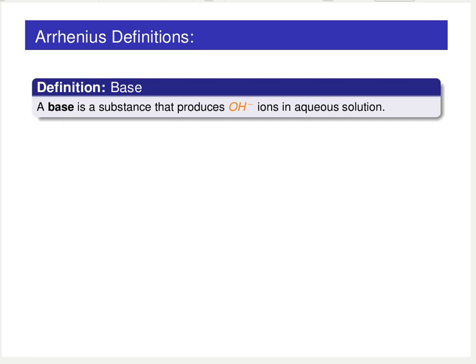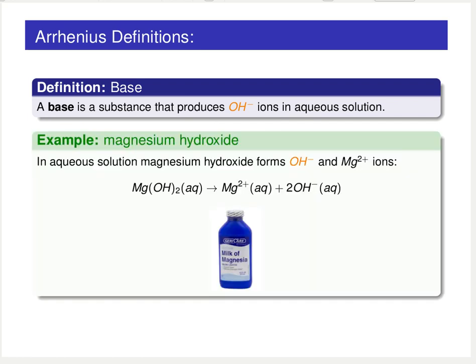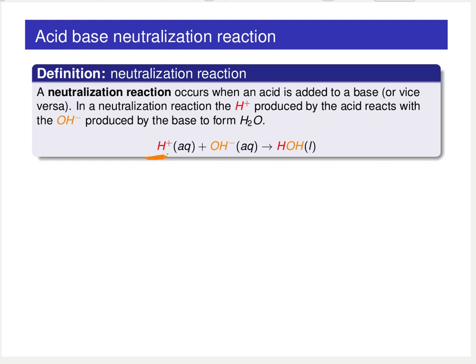The acid produces an H⁺ in solution. Now, the definition of a base is a substance that produces OH⁻ ions in solution. Going back to our magnesium hydroxide example, an aqueous solution of magnesium hydroxide contains Mg²⁺ ions and hydroxide anions. If you take H⁺ ions and add OH⁻ ions, you end up with water — H₂O. This is the definition of a neutralization reaction, and the formation of water from hydroxide and a proton is the hallmark of an acid-base reaction.